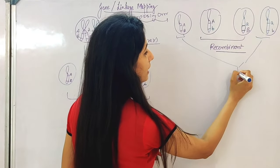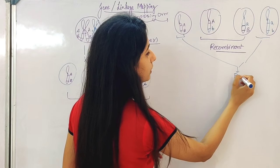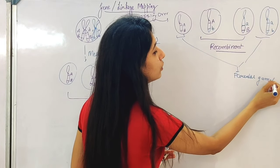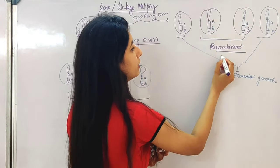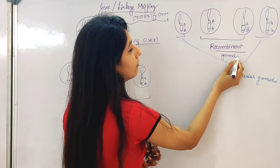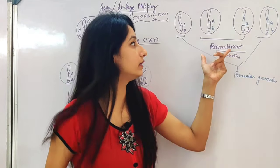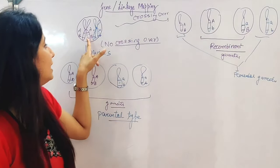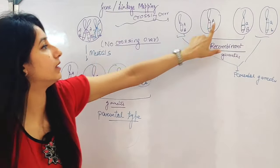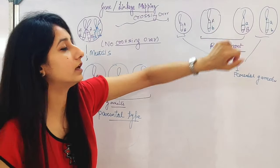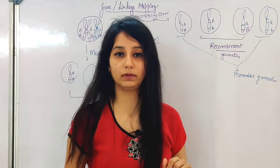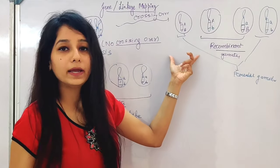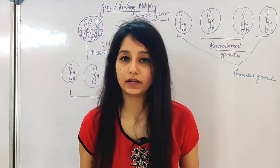So what do we say to the others? Parental — parental gametes. And what do we say? Recombinant gametes. There are two types of gametes: either parental type or recombinant type.